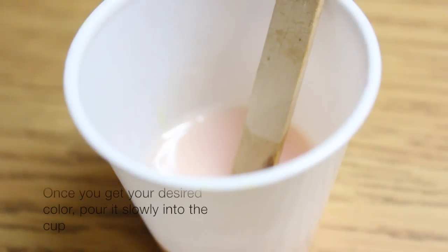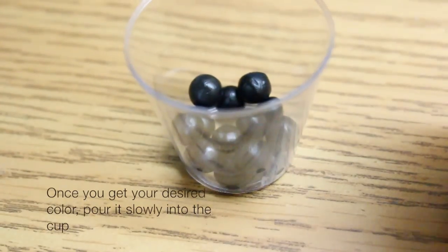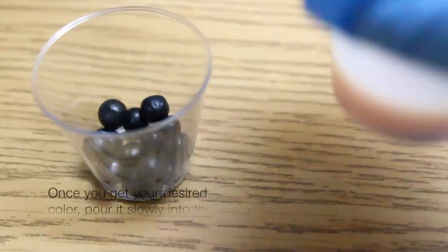So this is the color I liked. I thought it looked very milk tea colored and now you're just going to pour it slowly into your boba cup. I started in the middle and just slowly poured it over.